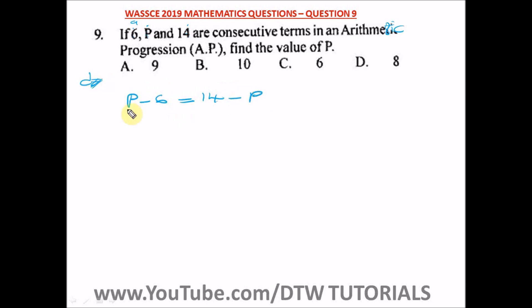From here we form an equation that we can easily get P. Let's take P to this side and take minus 6 to this side. Taking P to this side we have P plus P equal to 14. Taking minus 6 to this side it becomes plus 6.